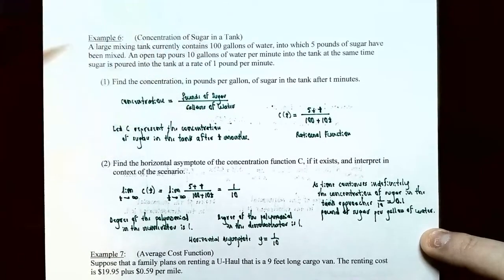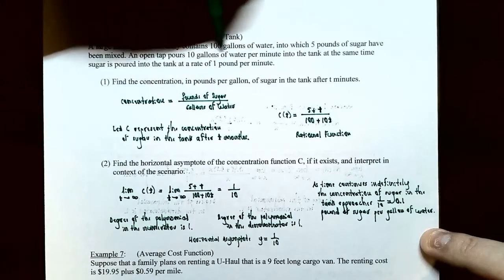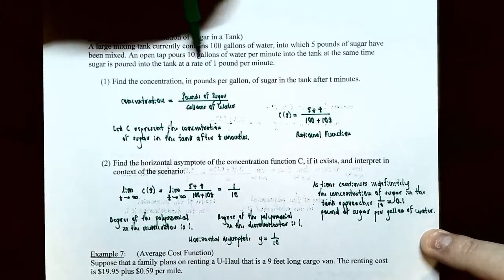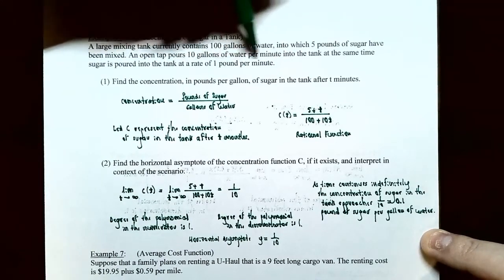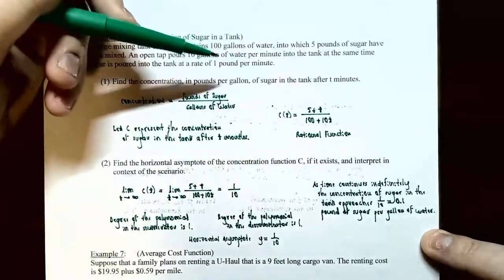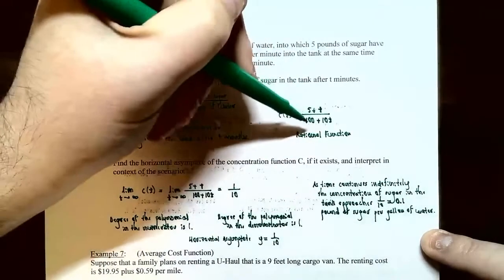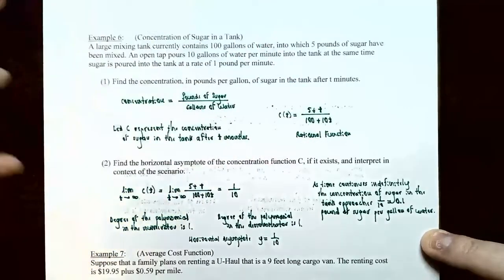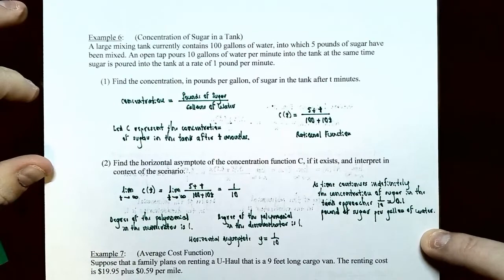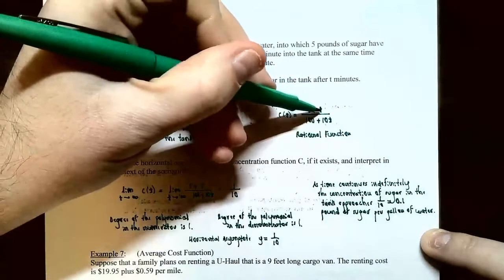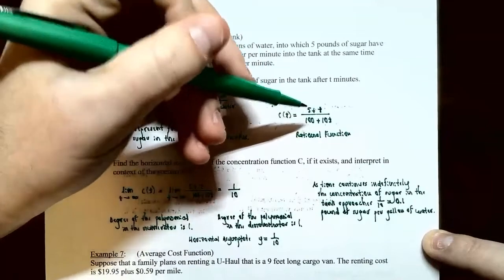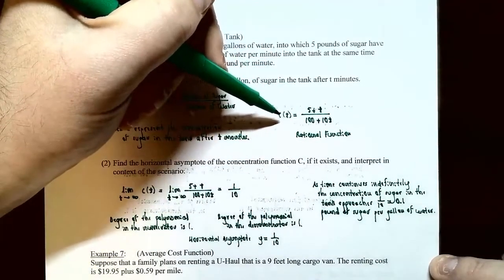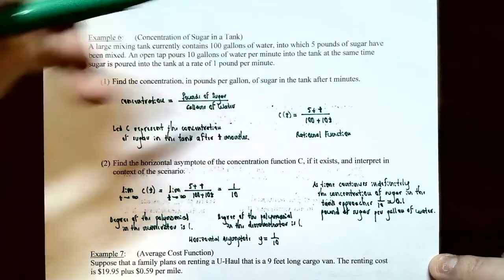In the denominator we have the gallons of water: originally 100 gallons, with 10 gallons added each minute, giving 100 plus 10t. So the concentration function is C(t) = (5 + t)/(100 + 10t). This is a rational function where the numerator and denominator are both polynomial functions of t.